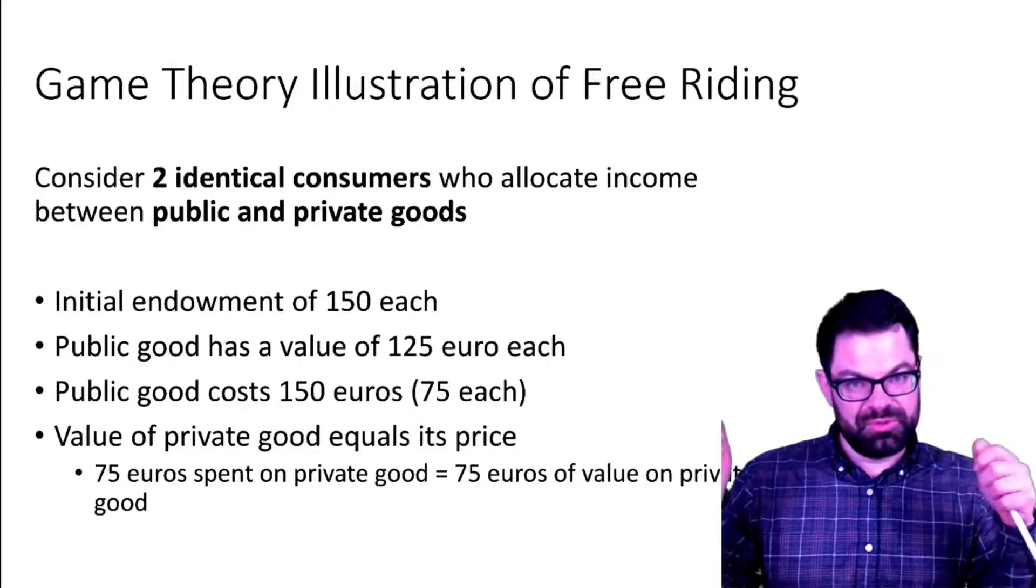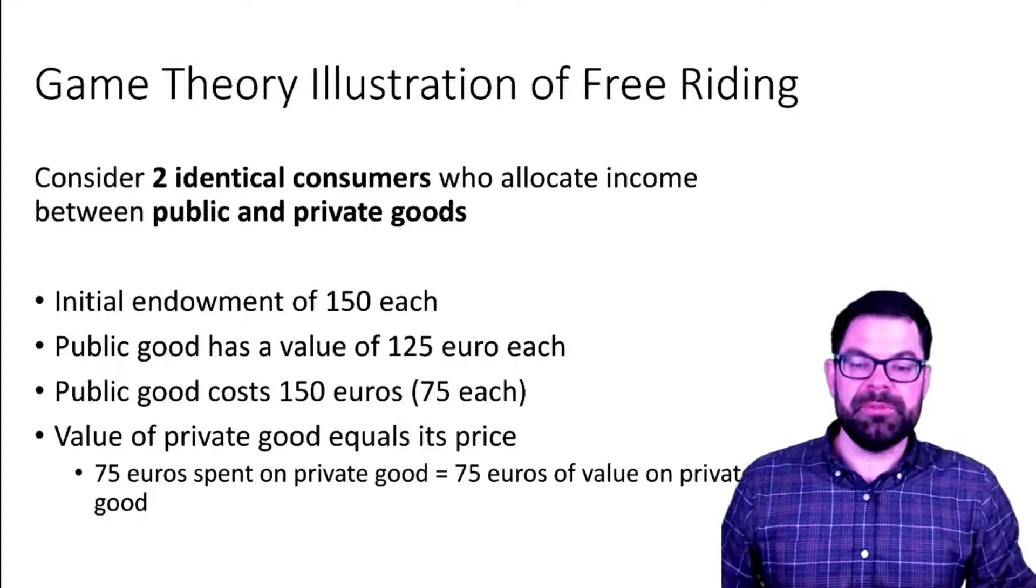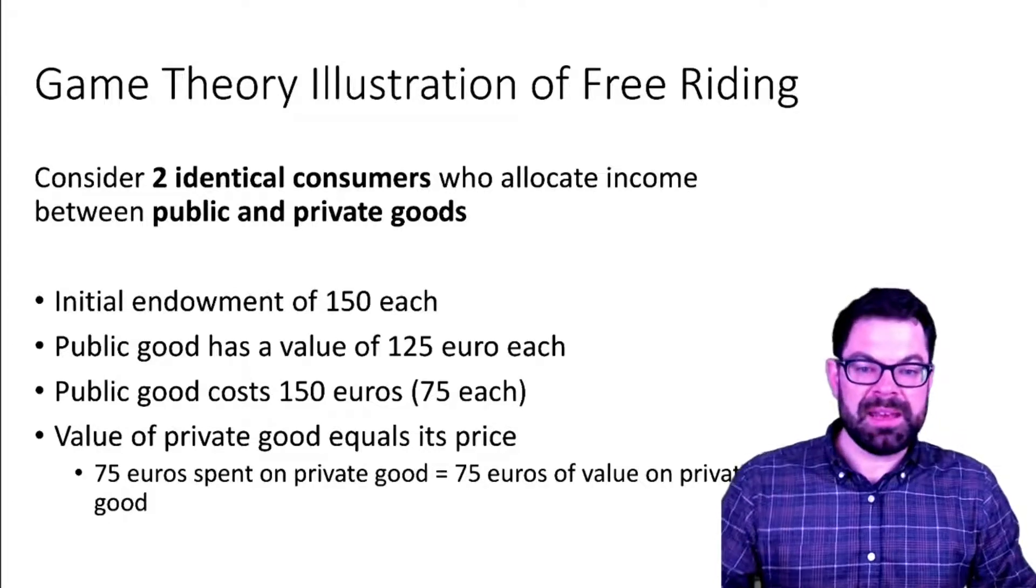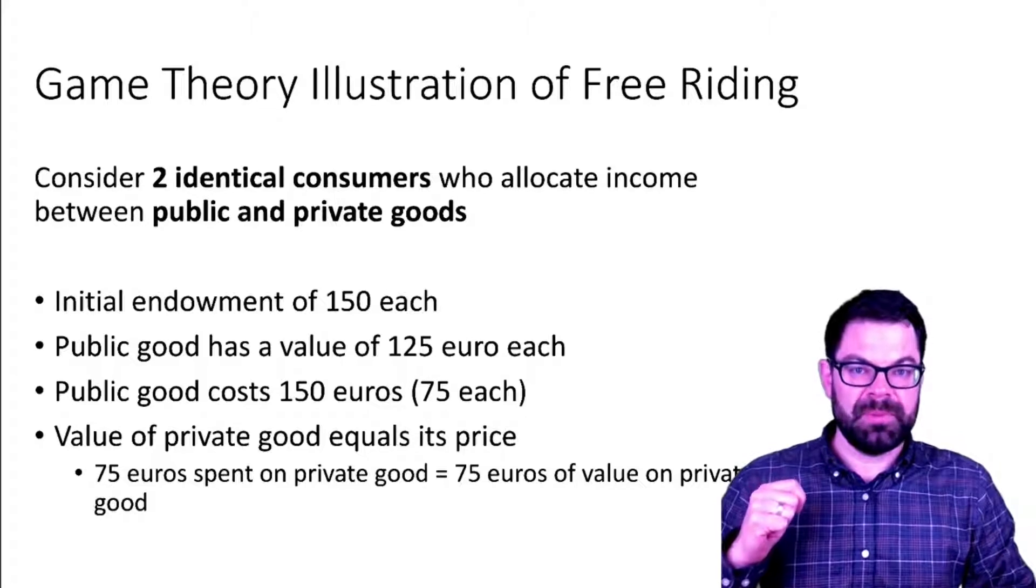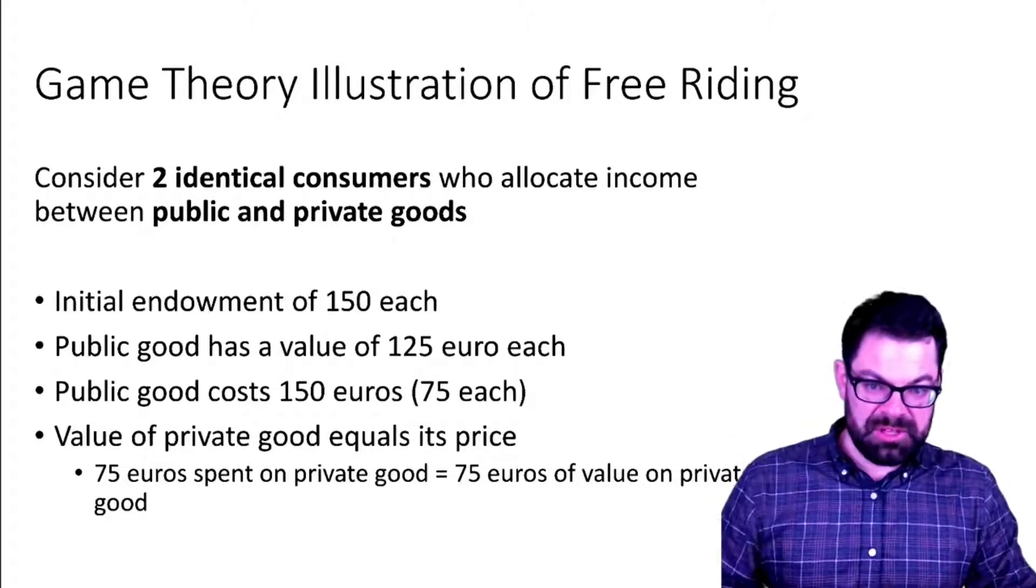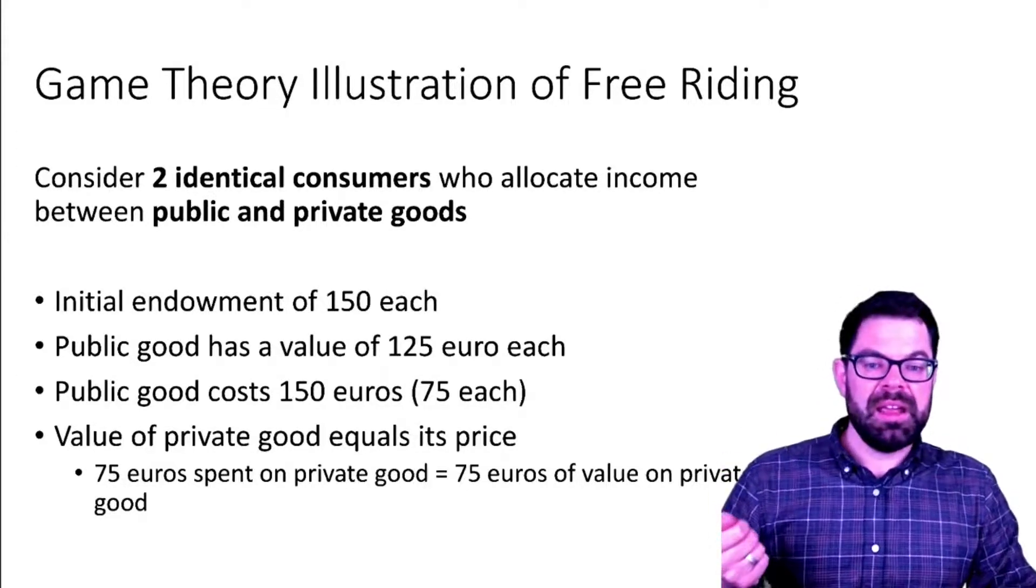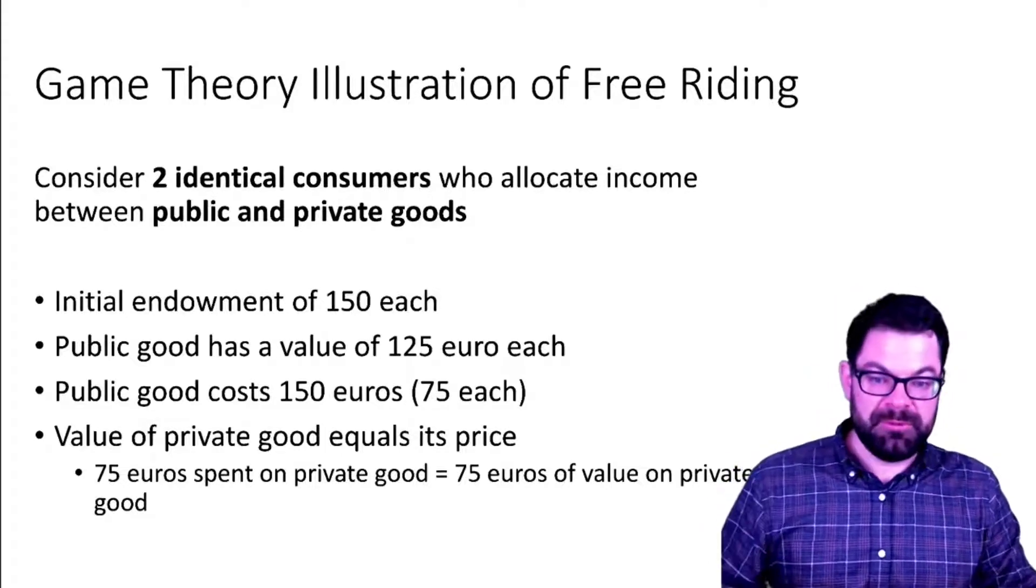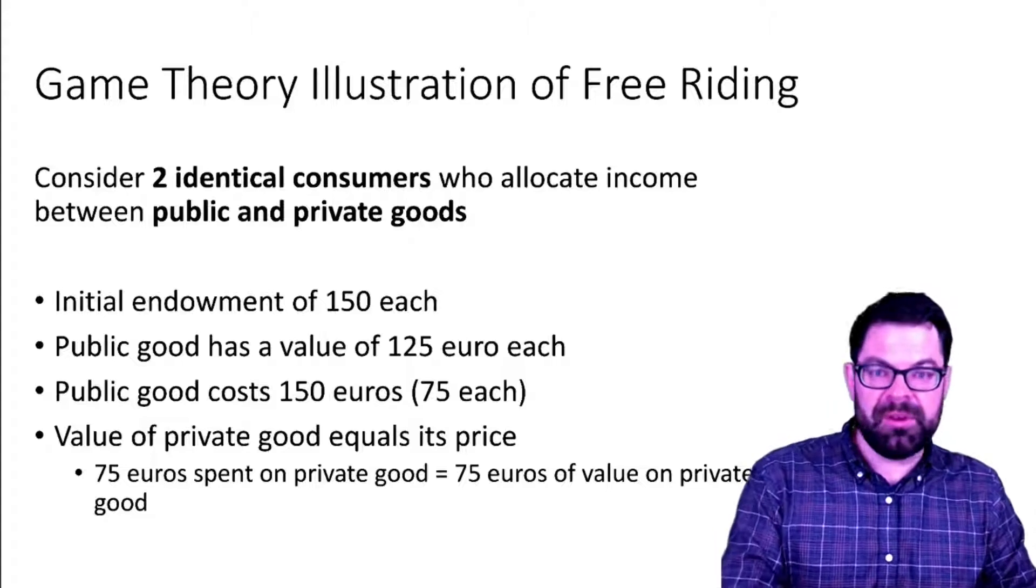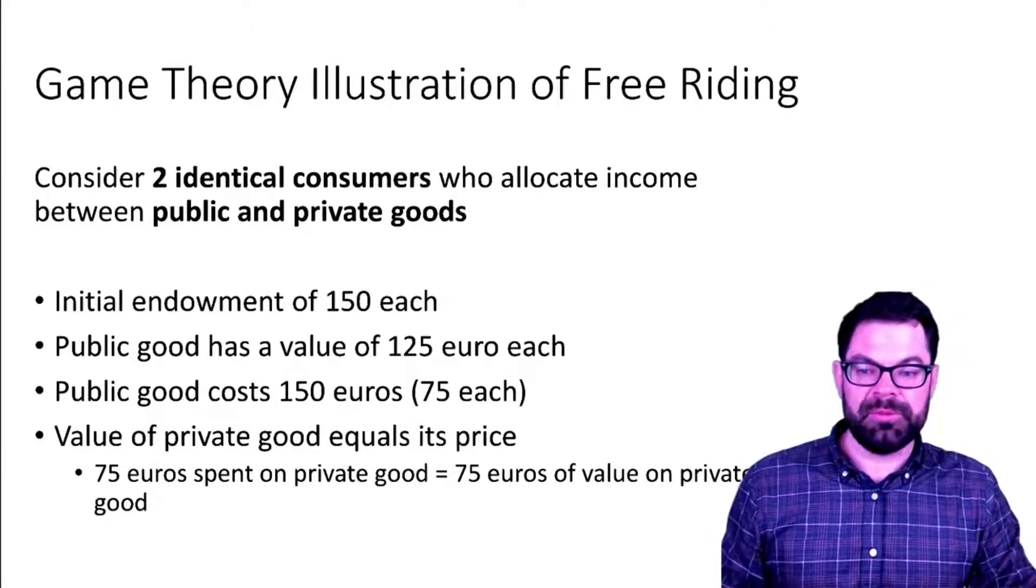To produce the public good it costs 150 euros, so they both have to chip in 75 euros and only then can they get this 125 benefit. For each of them individually it's a good deal because they pay 75 but they get 125 out of it.